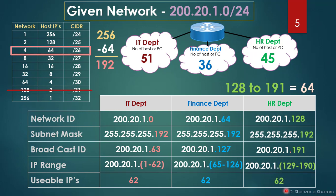With subnetting, each network connects to others only through a router. So each department is a different network. If a PC in one department is infected with a virus, it will not infect the other departments. IP subnetting protects each network, helps minimize broadcasting, enhances security, and makes it easy for a network administrator to manage all three different networks.